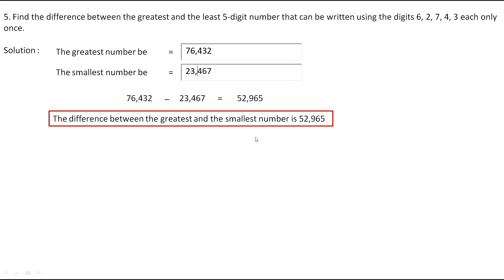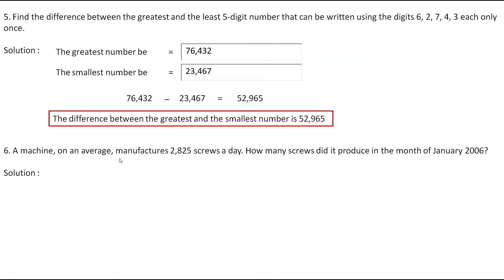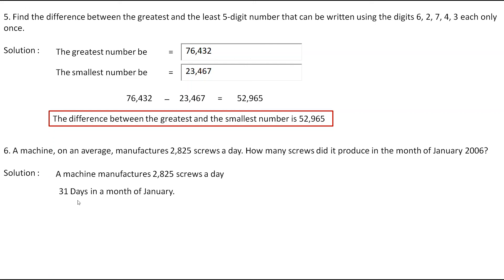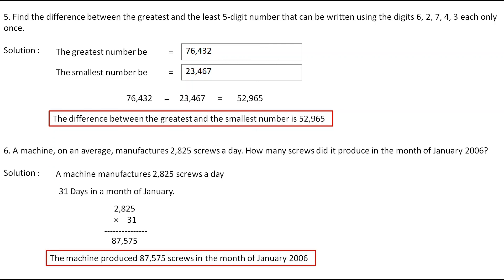Now the next question. A machine on average manufactures 2,825 screws a day. How many screws did it produce in the month of January 2006? We need to find how many screws it produces in January if it makes 2,825 per day. Since January has 31 days, this is repeated addition, so we multiply. 2,825 multiplied by 31 gives 87,575. The machine produces 87,575 screws in the month of January 2006.